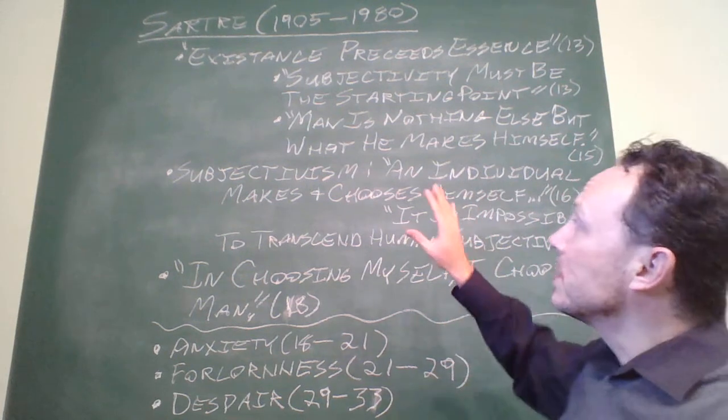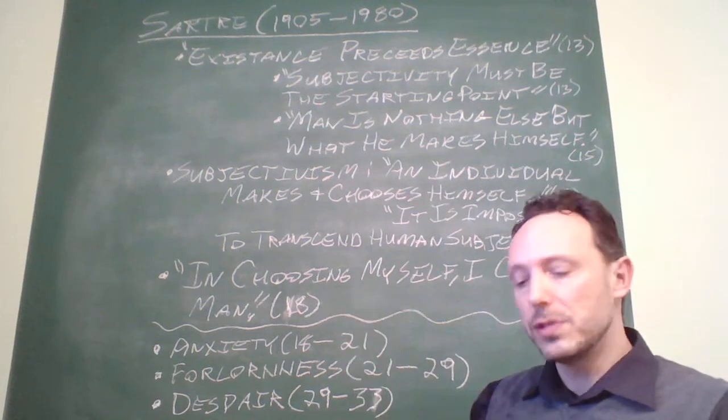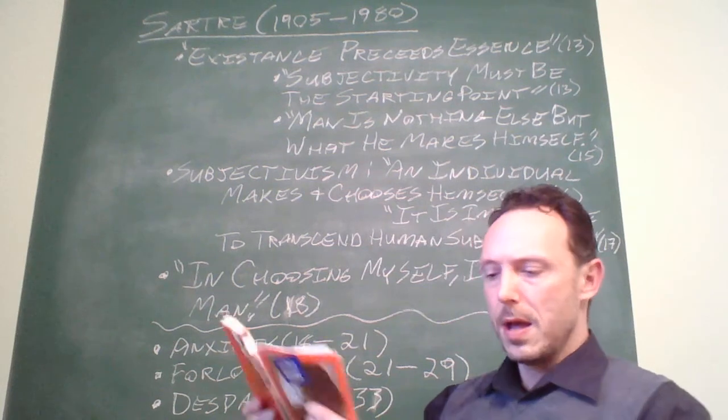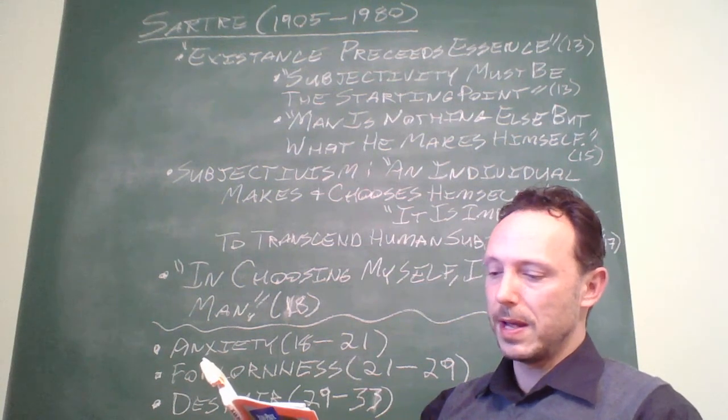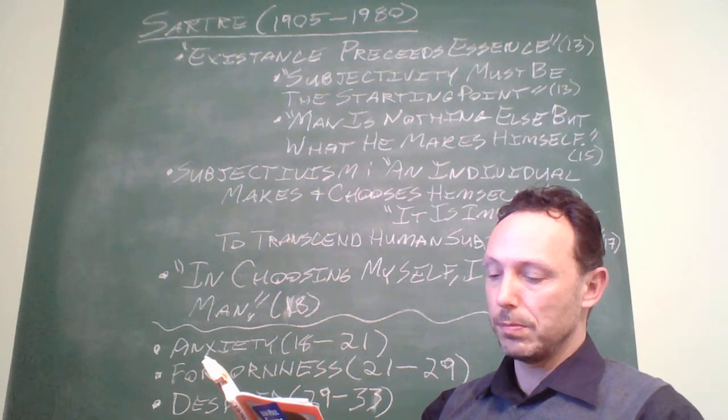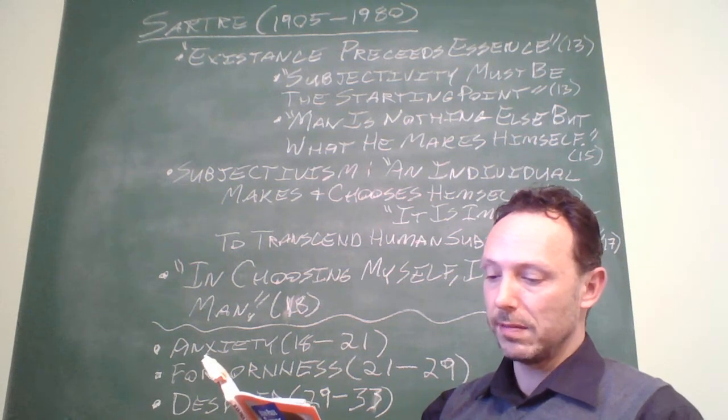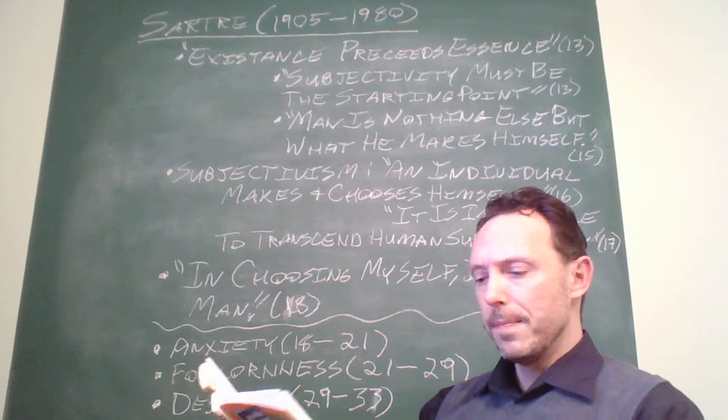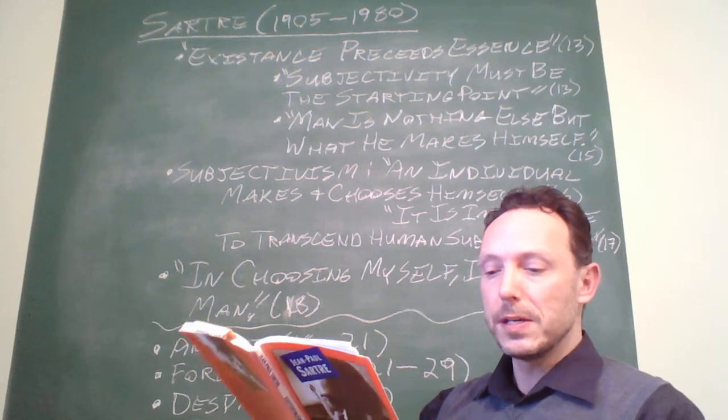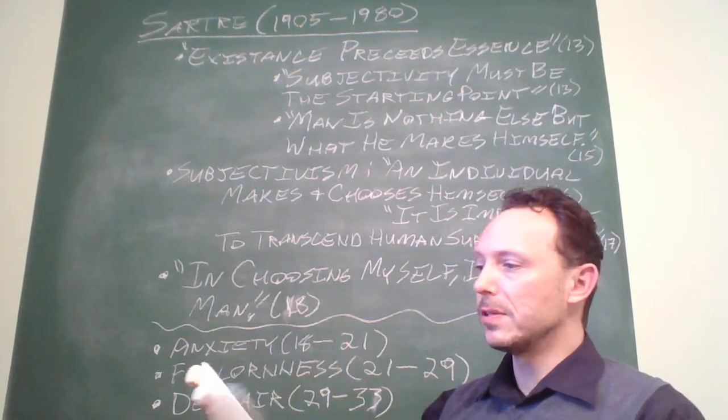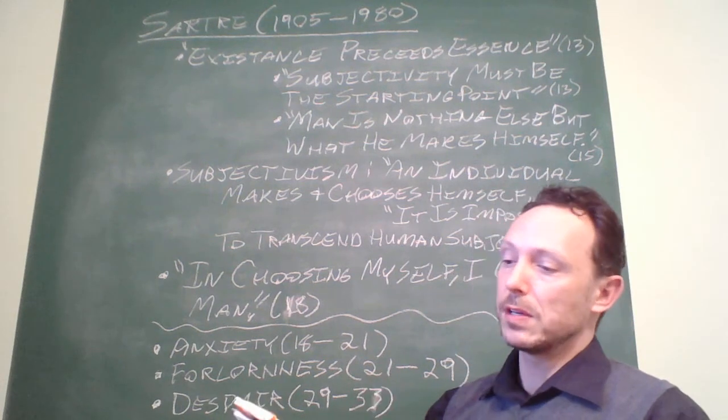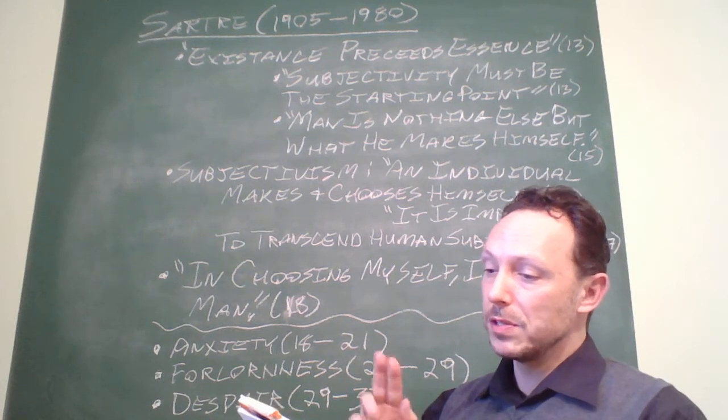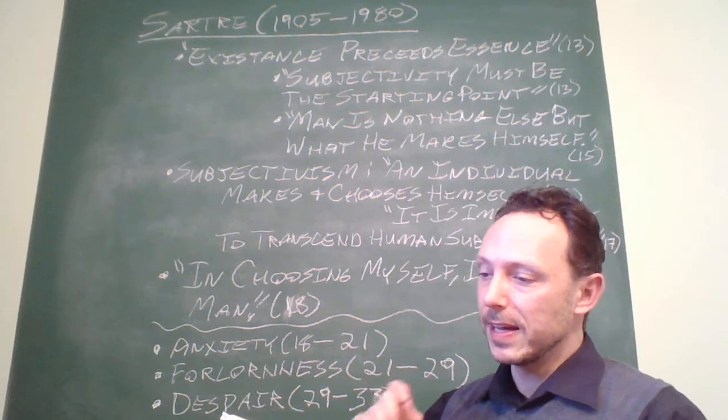Subjectivism, he points out on 16 and over to 17, there are essentially two features of subjectivism. He says, bottom of 16, but the word subjectivism has two meanings and our opponents play on the two. Subjectivism means on the one hand that an individual chooses and makes himself and on the other hand that it's impossible for man to transcend human subjectivity. The second of these is the essential meaning of existentialism.